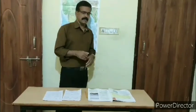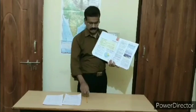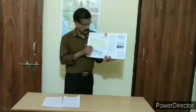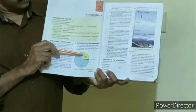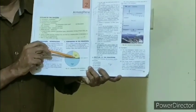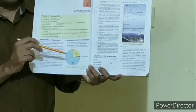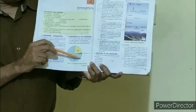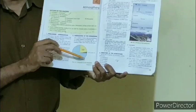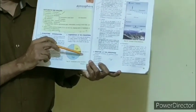Let us see the main composition of the atmosphere. From this diagram in your textbook, you can see that 21% is oxygen, 78% is nitrogen, and 1% is carbon dioxide, argon, and many other gases.